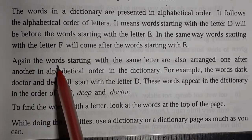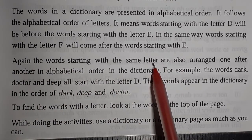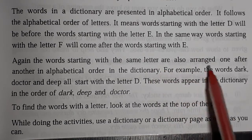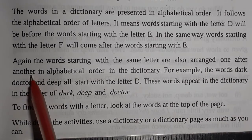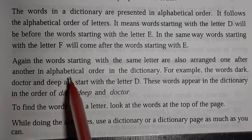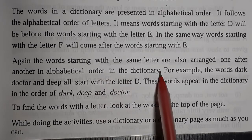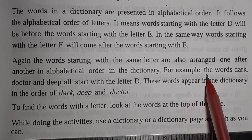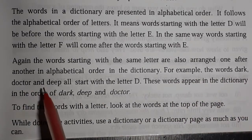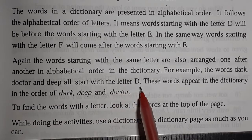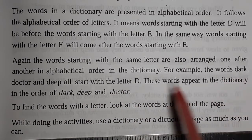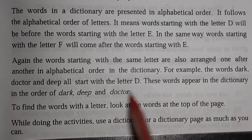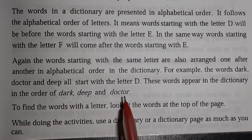The words starting with the same letter are also arranged one after another in alphabetic order in a dictionary. For example, the words dark, doctor and deep all start with the letter D. The words appear in the dictionary in order of dark, deep and doctor.